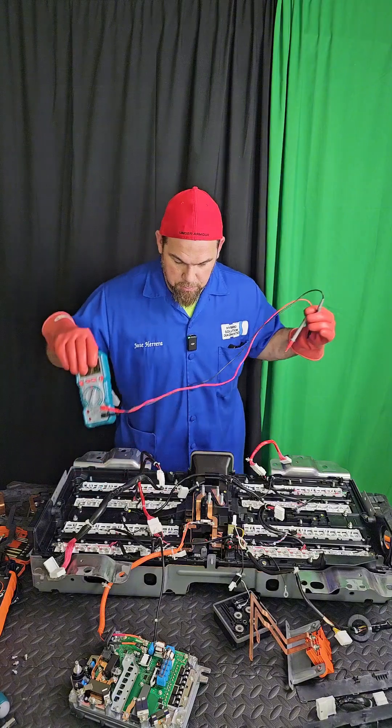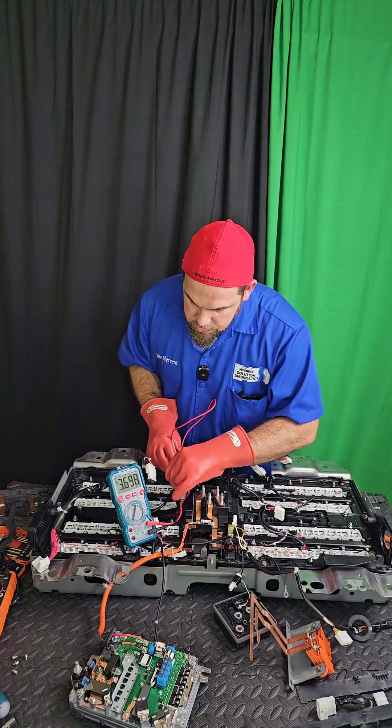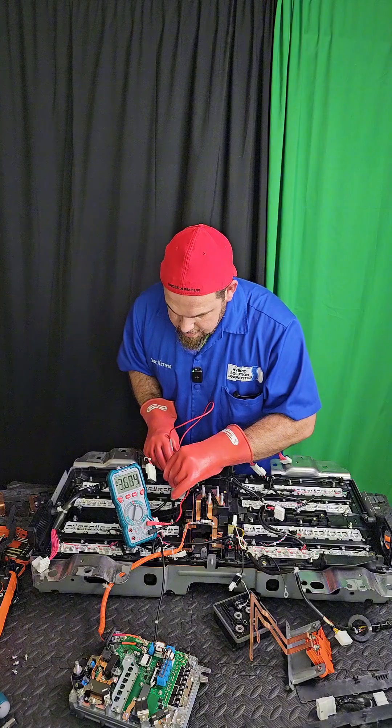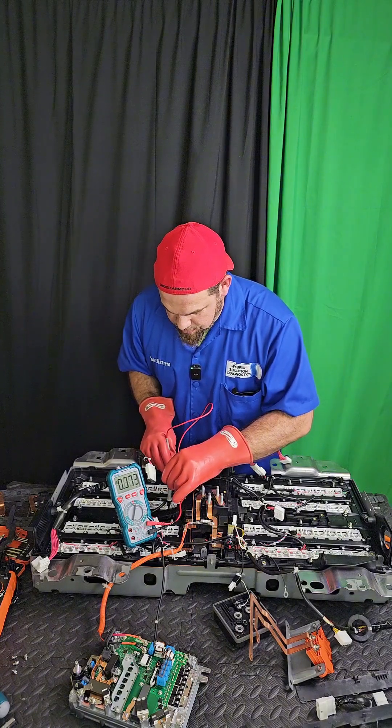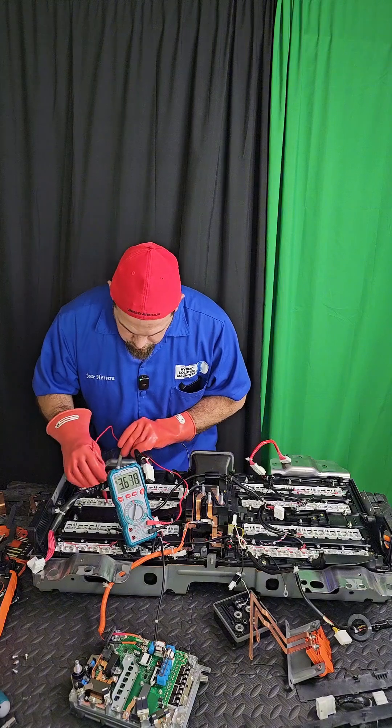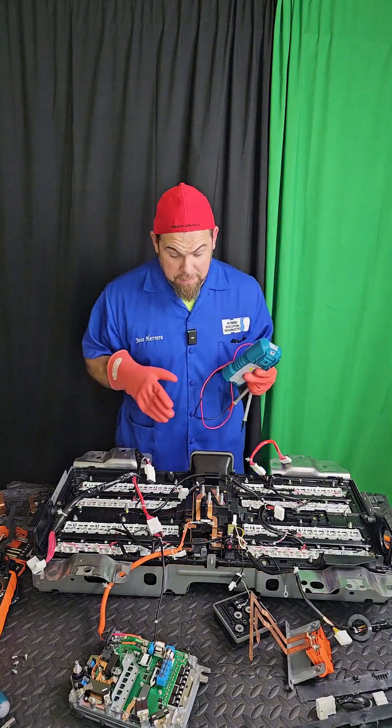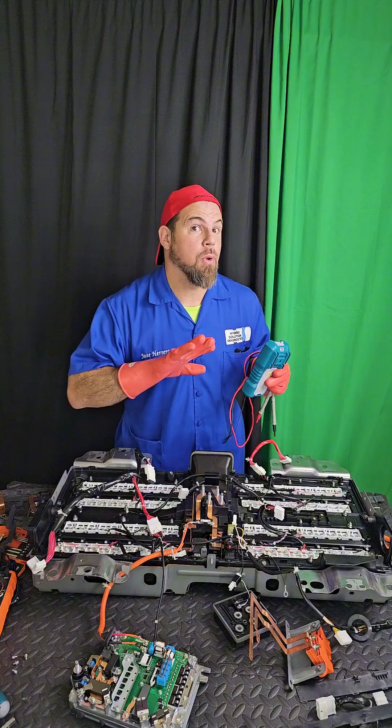Let's check the module from the other side. 3.69. Yeah, it's actually 3.7. Absolutely no delta voltage is telling me clearly that there's no delta between the cells, which is a good sign. Now it's time to do the insulation test.